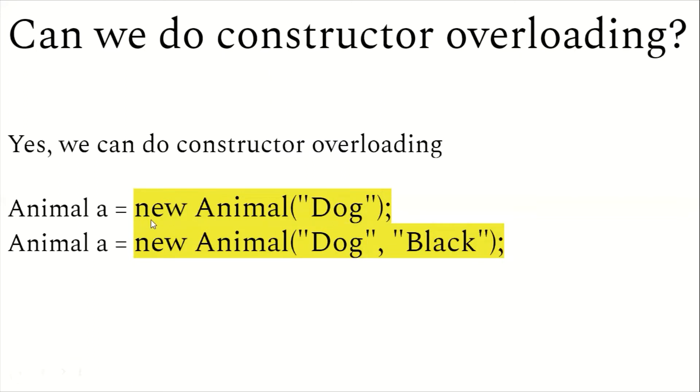In the first line, we have 'Animal a = new Animal' and I passed 'Dog' to it, which is one parameter. In the next line, I am passing the animal name 'Dog' along with the color 'Black'. In the first constructor I am passing one parameter, in the second constructor I am passing two parameters. This is known as constructor overloading and this happens in the same class.